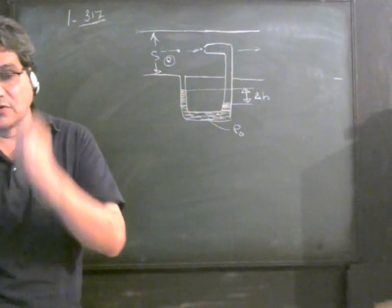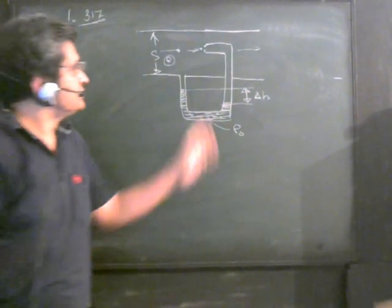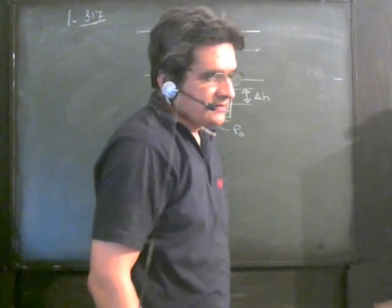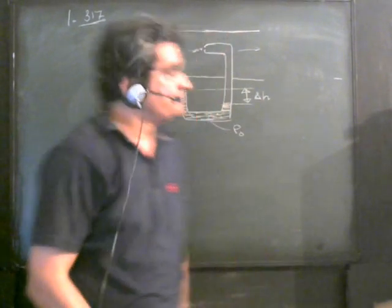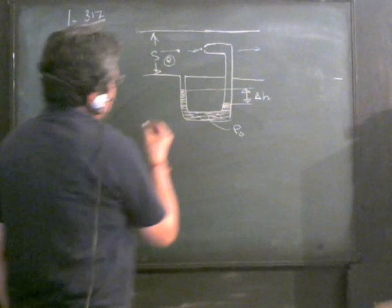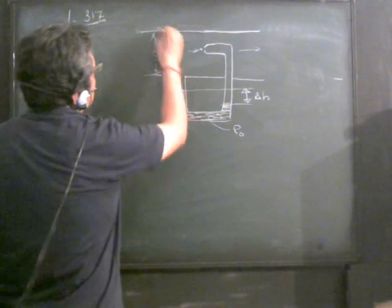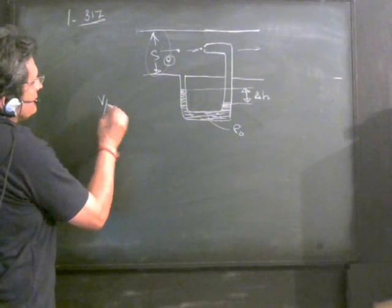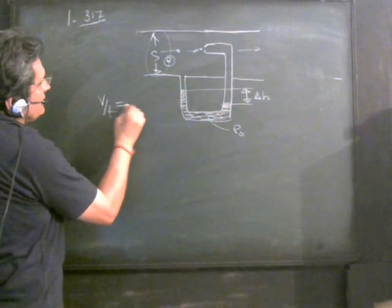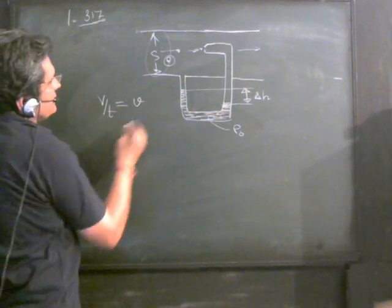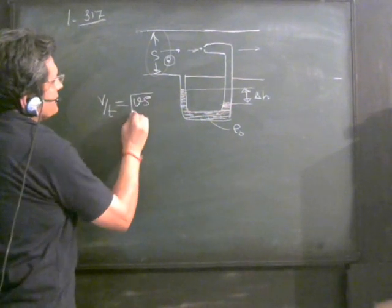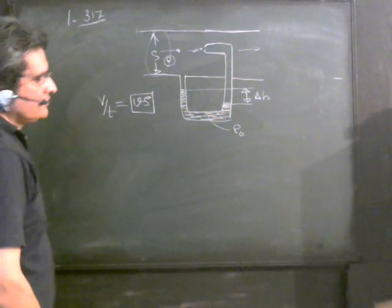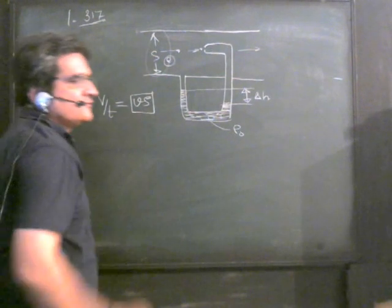We need to find the volume flowing through the gas pipeline per unit time. For finding the flow of volume per unit time, volume equals velocity times cross-section area. We have been given the cross-section area, but we don't know the velocity.